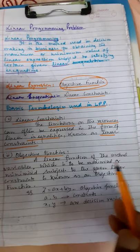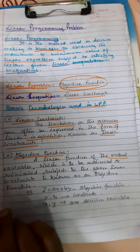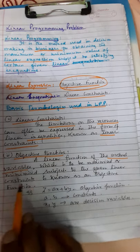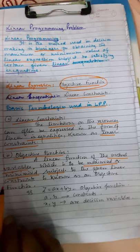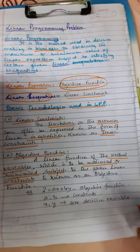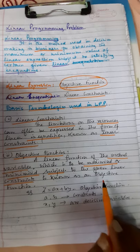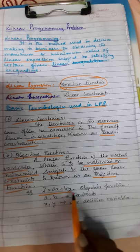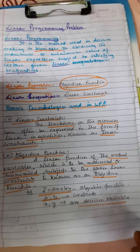Objective function — what is the objective function? A linear function of the involved variables which is to be maximized or minimized, subject to the given linear constraints. That is known as the objective function. It is generally written as Z = AX + B, where A and B are constants and X, Y are decision variables.